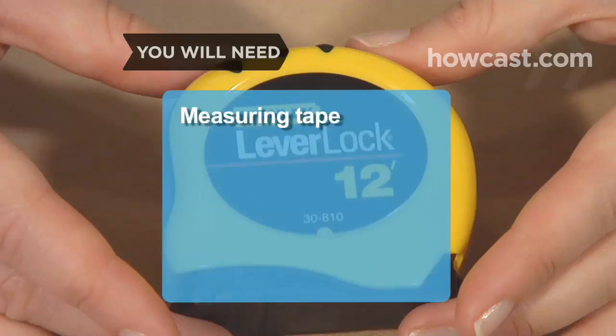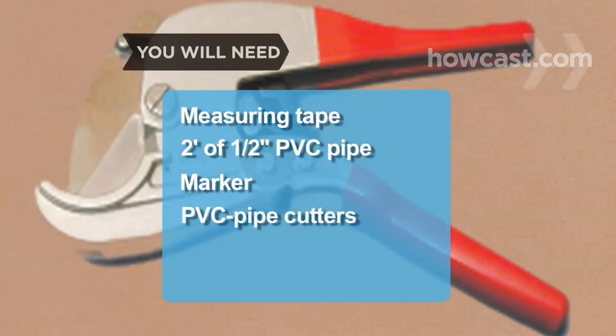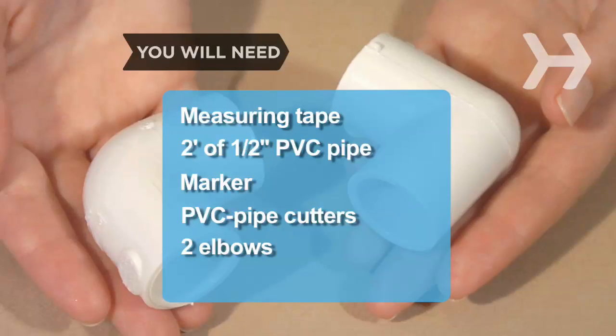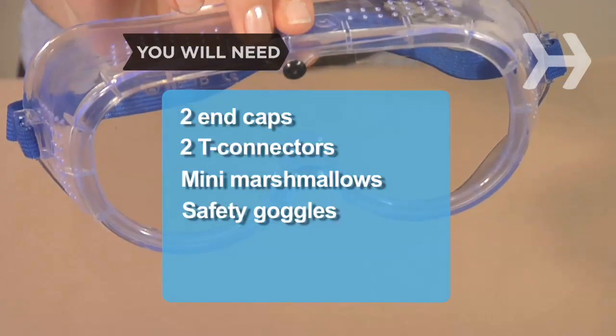You will need measuring tape, 2 feet of 1⁄2-inch internal diameter PVC pipe, a marker, PVC pipe cutters, 2 elbows, 2 end caps, 2 T connectors, mini marshmallows, and safety goggles.